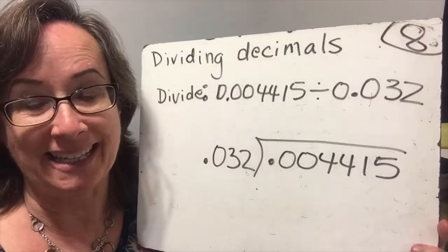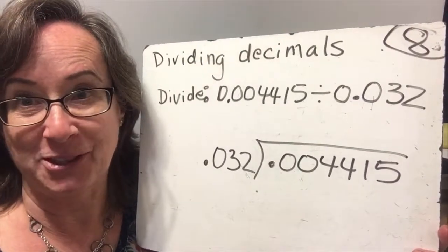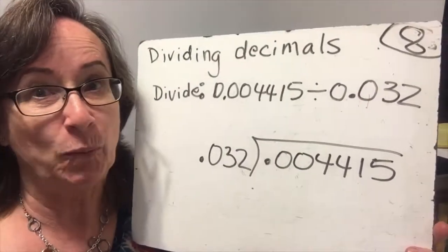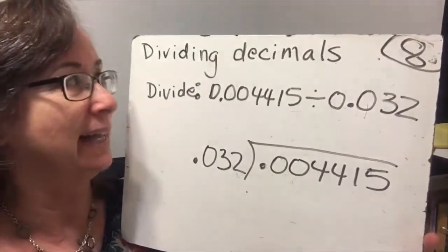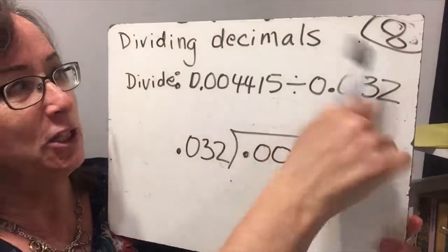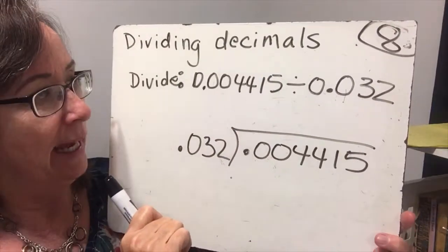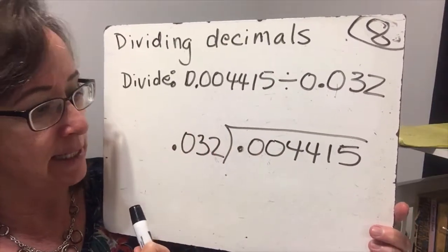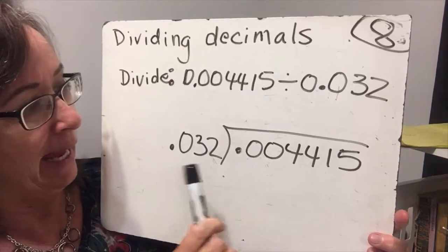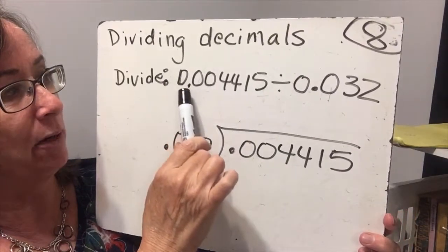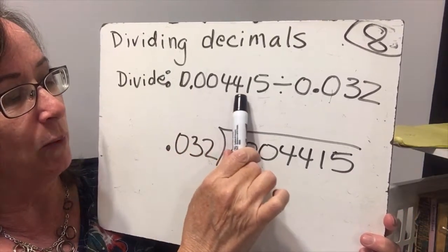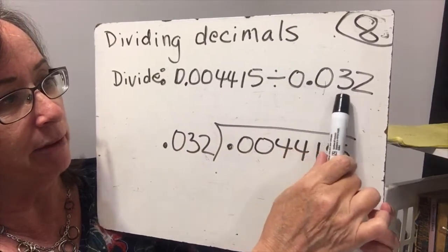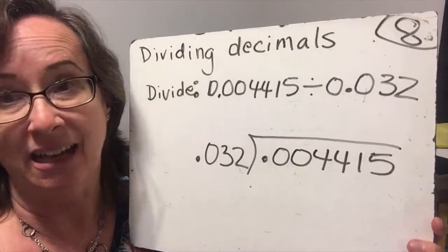Hello, my amazing algebra half students. This is Mrs. A, and I love math. Today we are doing lesson 8, which is dividing decimals, and we're going to start with the first example: divide 0.004415 by 0.032. That's a lot of zeros.